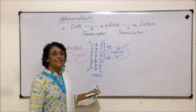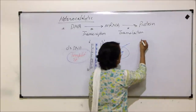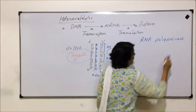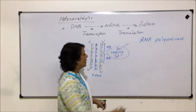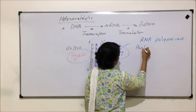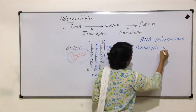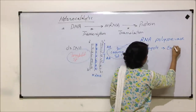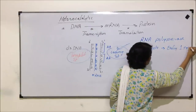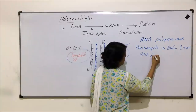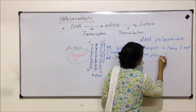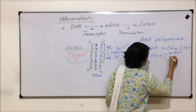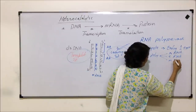The enzymes which help in RNA synthesis are known as RNA polymerase. In case of prokaryotes, there is only one type of RNA polymerase, and this RNA polymerase helps in the synthesis of all three types of RNA — that is rRNA, tRNA, and mRNA.